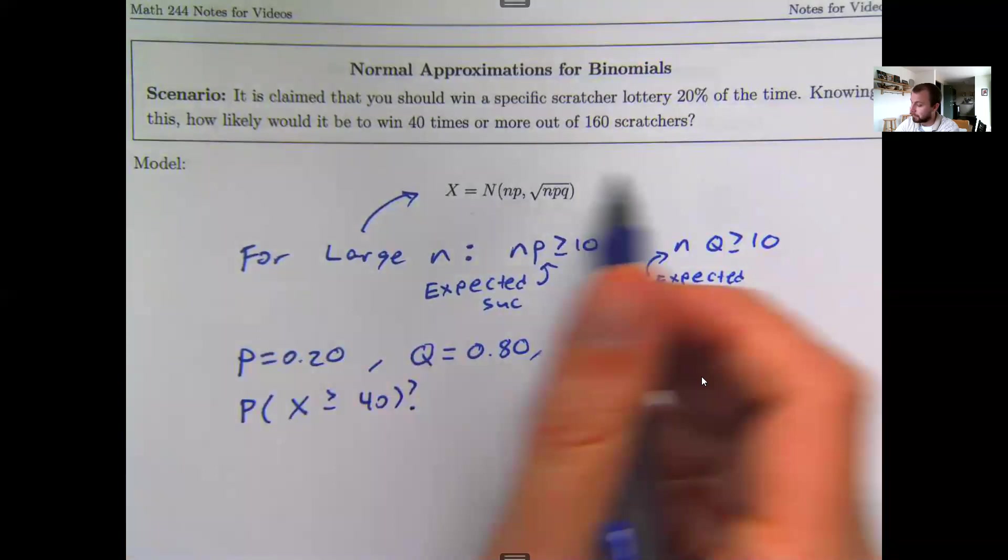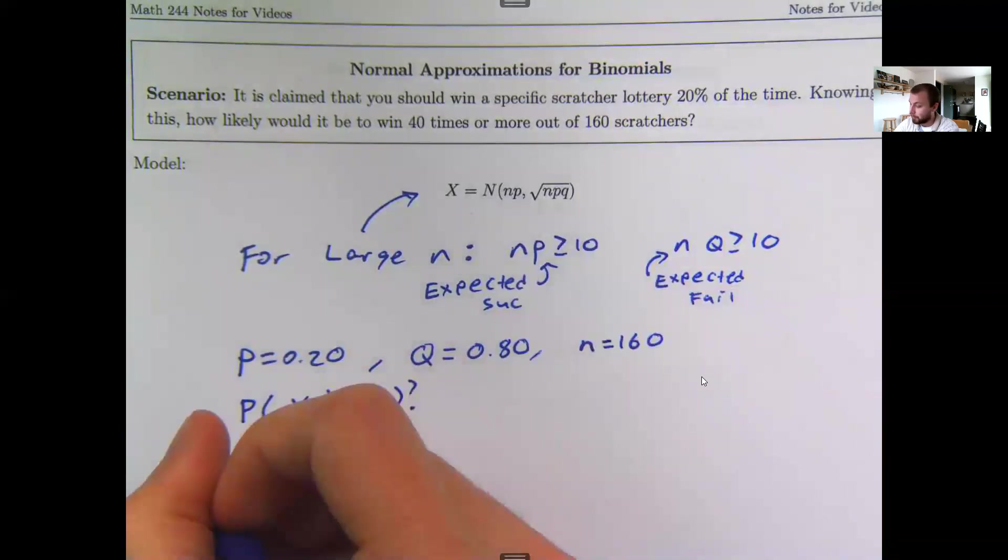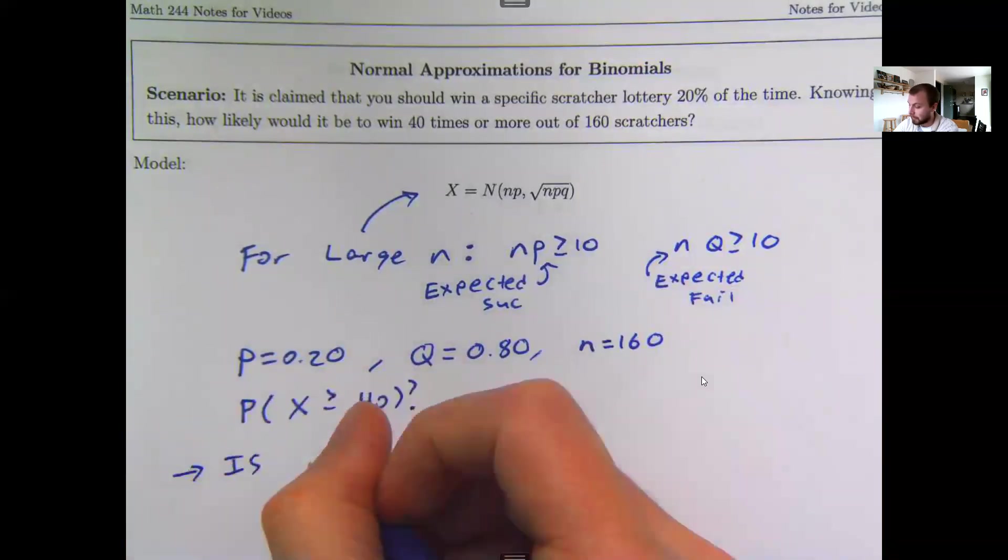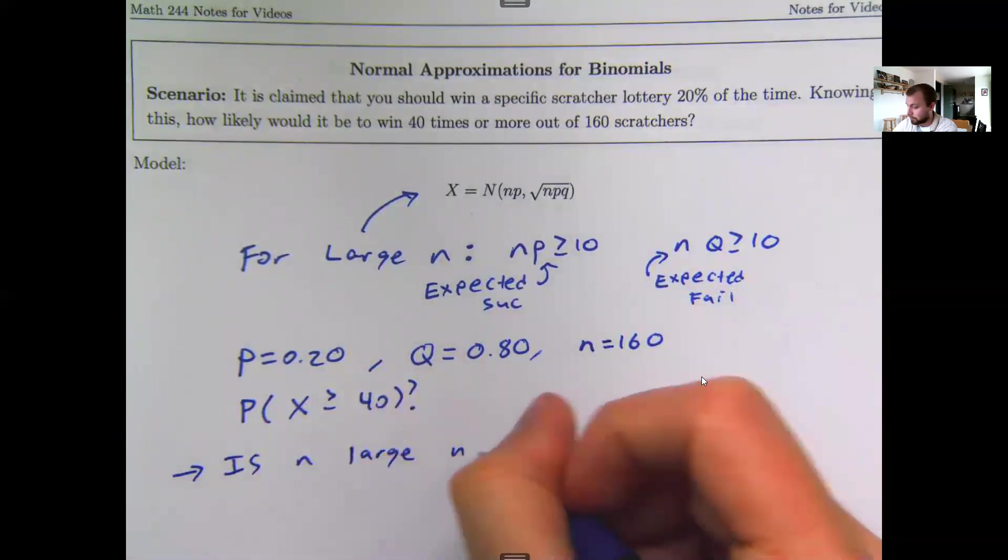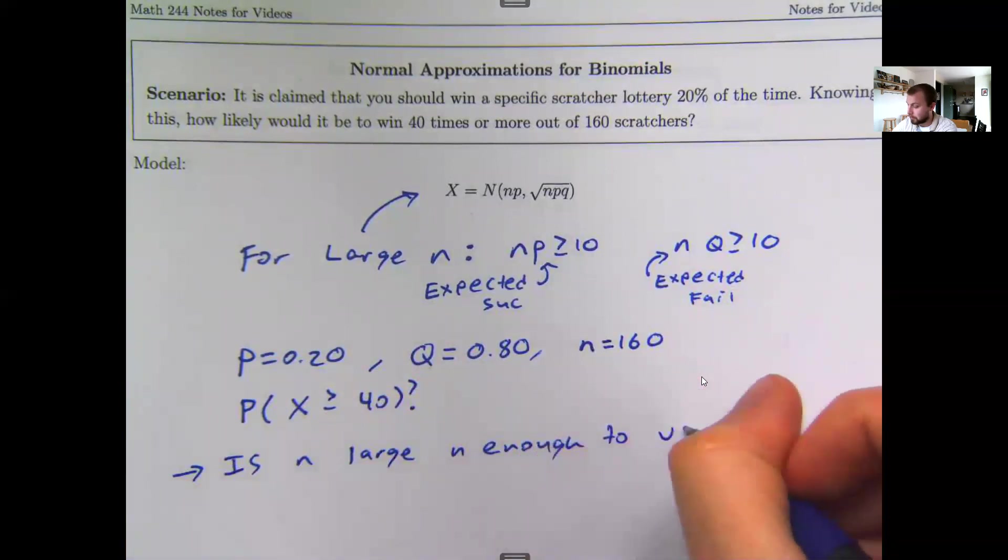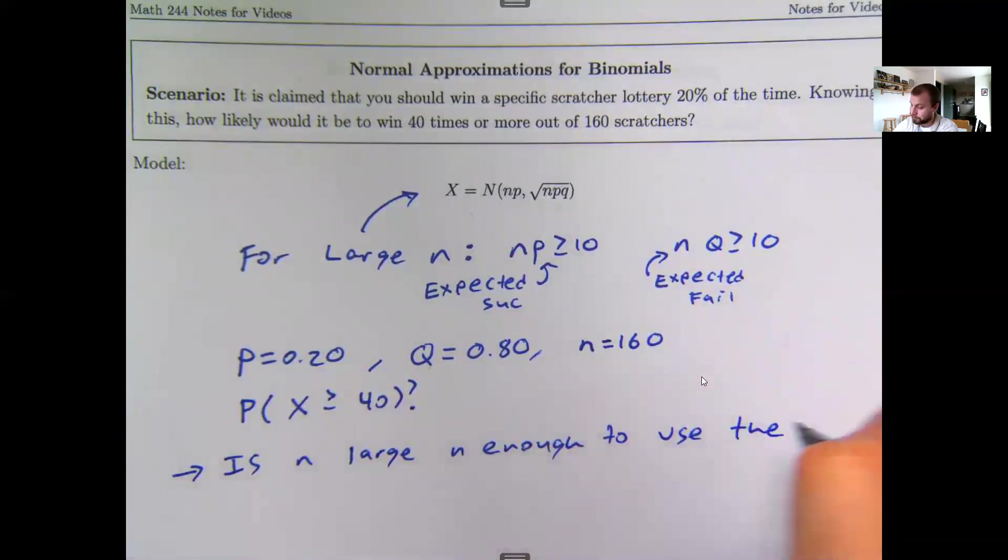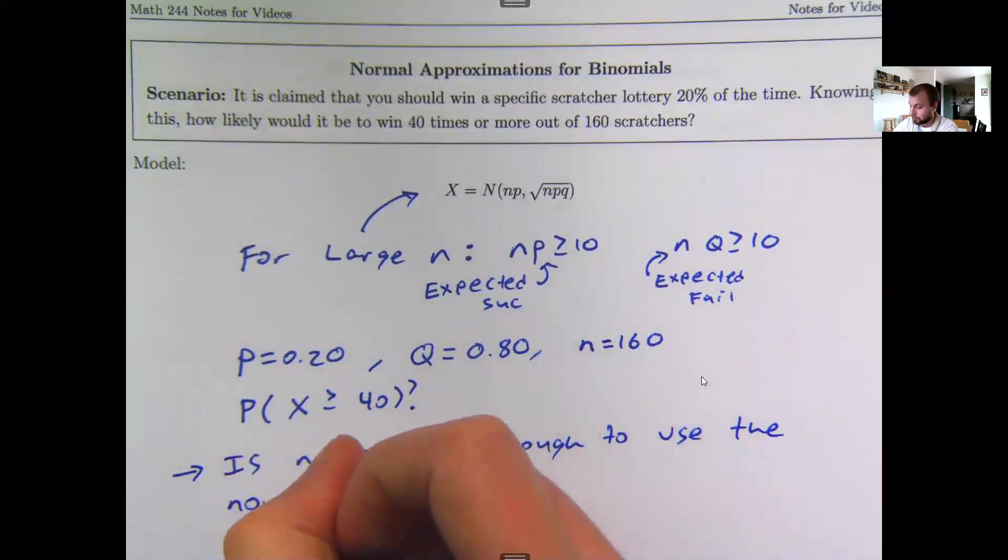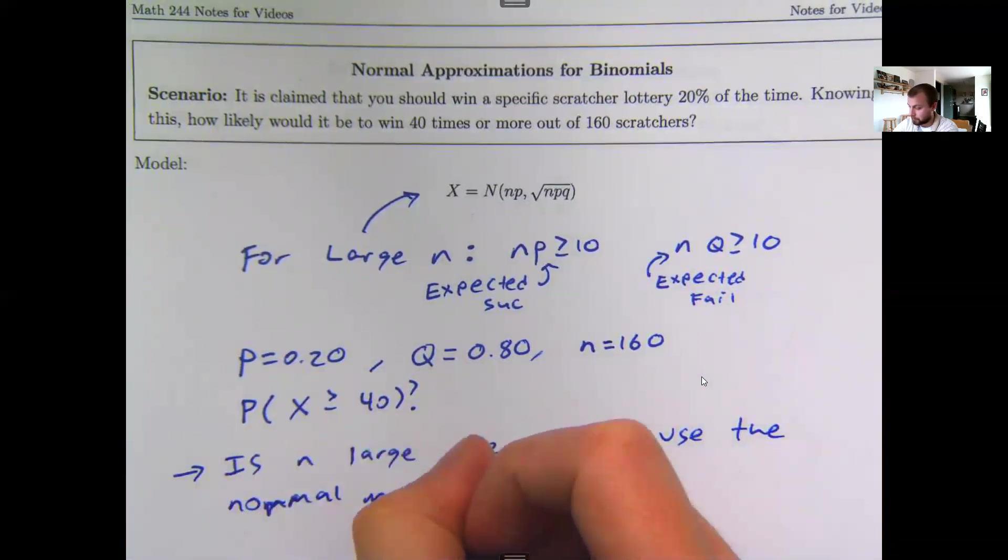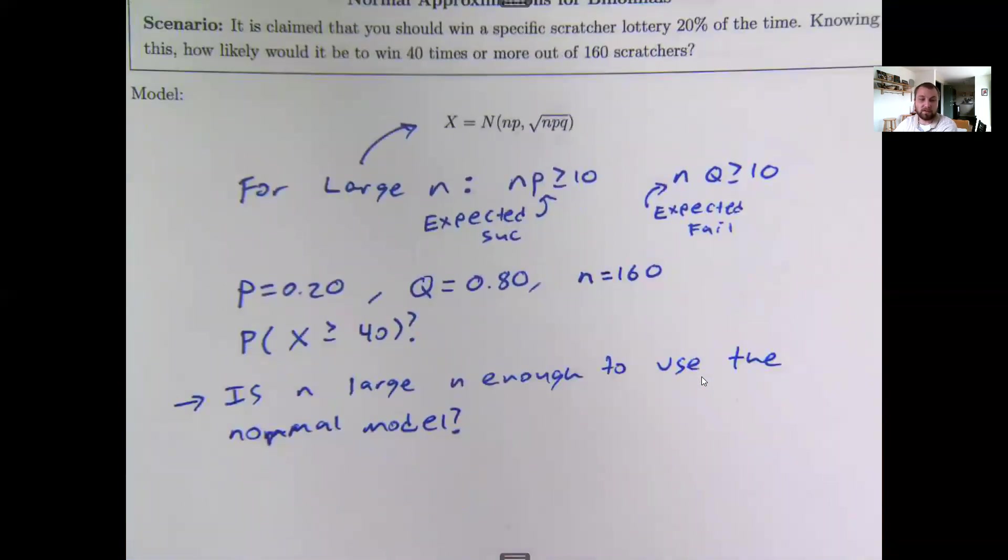So before I try to use this model, I'm just going to check is n large enough to use the normal model, and if my n is not large enough to use this normal model, then I would stick to using binomials.